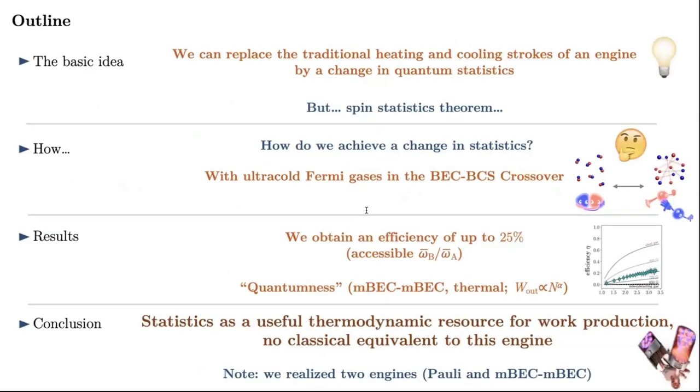So, to sum up, what we did was to replace the traditional heating and cooling stroke of a heat engine by a change in quantum statistics. We obtained an efficiency of up to 25% in the experimentally accessible range of the compression ratio. And, we showed the quantum character of the engine by comparing it to an engine completely running on the bosonic side and also to a thermal control. And, the main conclusion of our work is that statistics would be a useful thermodynamic resource for work production. And, because we are relying on quantum statistics, there is no classical equivalent for this.